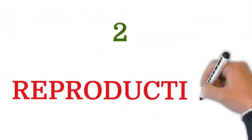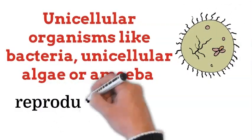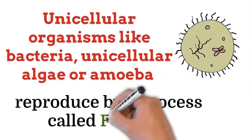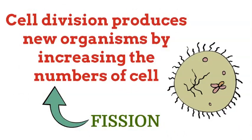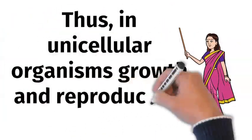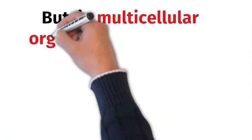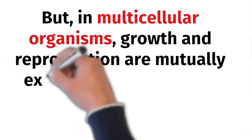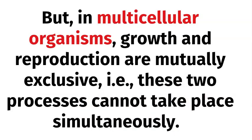Now the second characteristic is reproduction. Unicellular organisms like bacteria, unicellular algae, or amoeba reproduce by a process called fission, in which cell division produces new organisms by increasing the number of cells. Thus in unicellular organisms, growth and reproduction are synonymous, but in multicellular organisms growth and reproduction are mutually exclusive — these two processes cannot take place simultaneously.